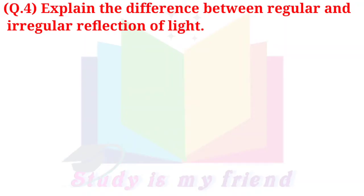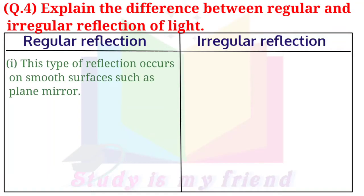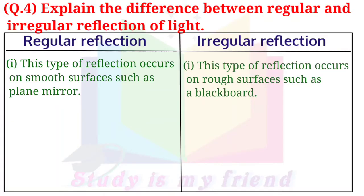Question 4: Explain the difference between regular and irregular reflection of light. Regular reflection occurs on smooth surfaces such as a plain mirror. Irregular reflection occurs on rough surfaces such as a blackboard.